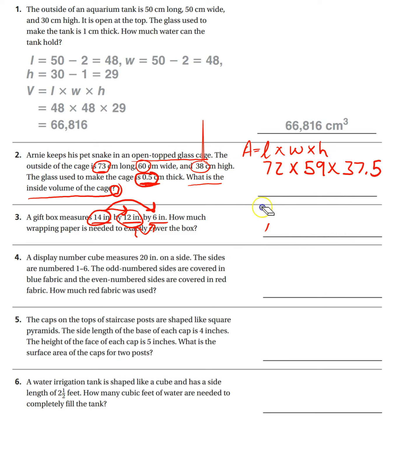Again, you can pause, you can rewind if you need to. Okay, a display number cube measures 20 on each side. The sides are numbered 1 through 6. The odd numbered sides are covered in blue fabric. The even numbered sides are covered in red fabric. How much red fabric was used?